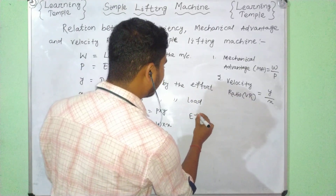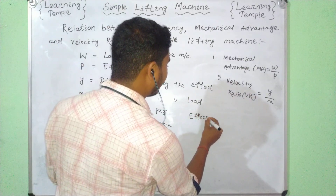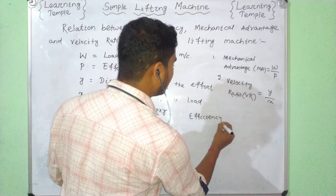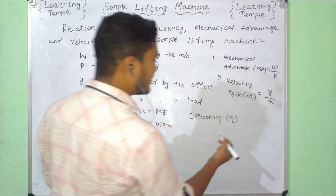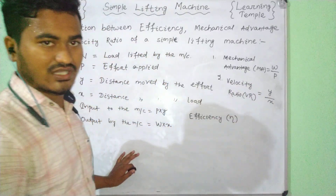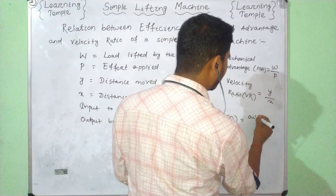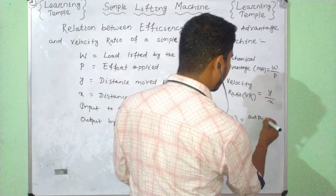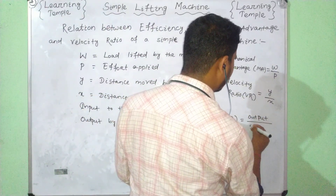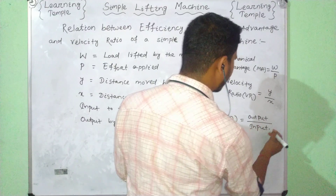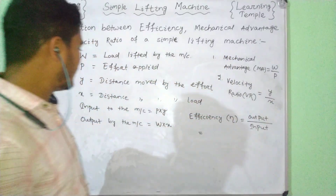So, efficiency equals output divided by input.